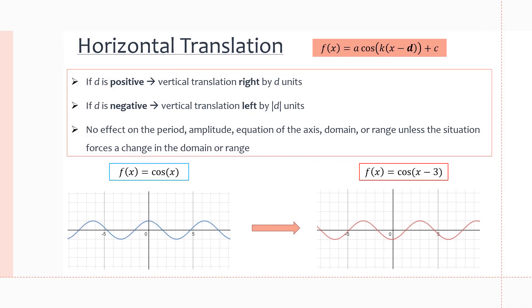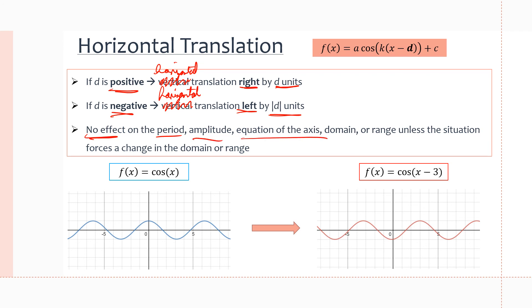Moving on to horizontal translation, which is our d value in our equation. If d is positive, we're going to horizontally translate right by d units. If it's negative, we're going to translate left by the absolute value of d. This transformation has no effect on period, amplitude, equation of axis, domain, or range, unless the situation forces a change in domain or range.